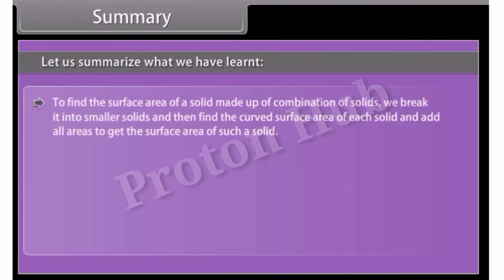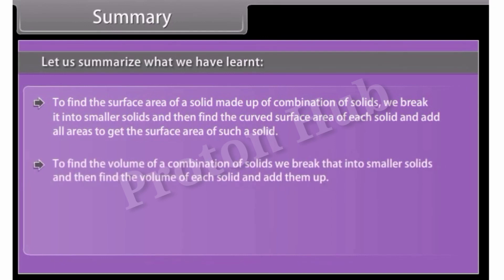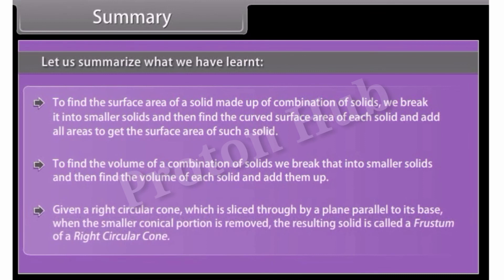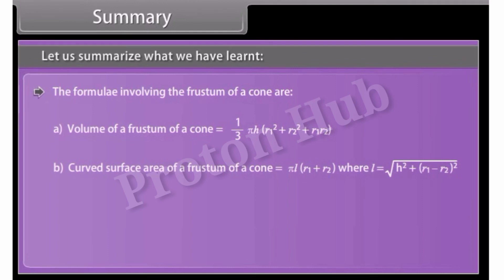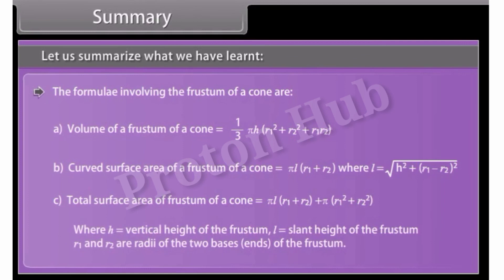Let us summarize what we have learned. To find the surface area of a solid made up of a combination of solids, we break it into smaller solids, find the curved surface area of each solid, and add all areas. To find the volume, we break the solid into smaller solids, find the volume of each, and add them up. A frustum of a right circular cone is formed when a right circular cone is sliced by a plane parallel to its base and the smaller conical portion is removed. The formulae involve H (vertical height), L (slant height), and R1 and R2 (radii of the two bases of the frustum).